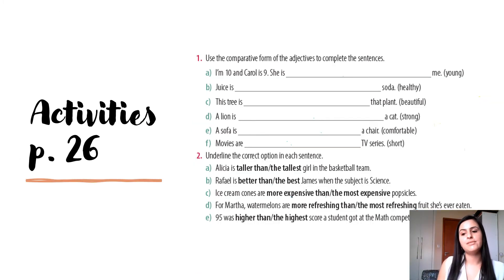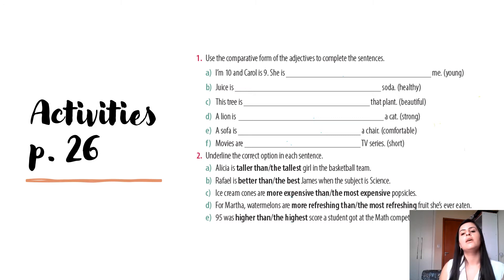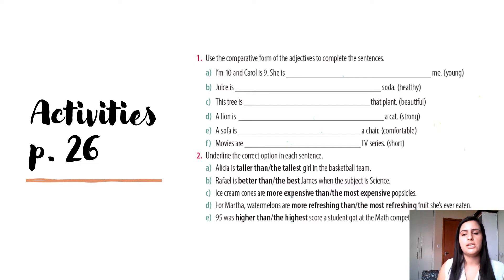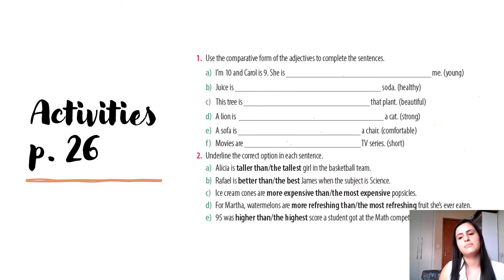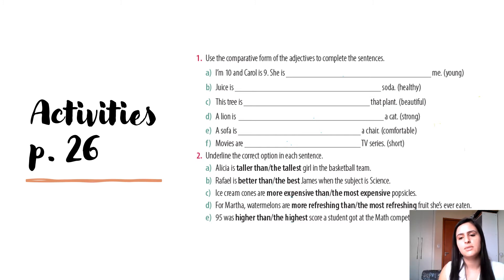Now, guys, I have some activities from page 26. You can find them at page 26 of your book. Use the comparative form of the adjectives to complete the sentences. I'm 10 and Carol is 9 — She is... [young]. Juice is... soda [healthy]. This tree is... that plant [beautiful]. A lion is... strong — a cat. A sofa is... a chair [comfortable]. Movies are... TV series [short].